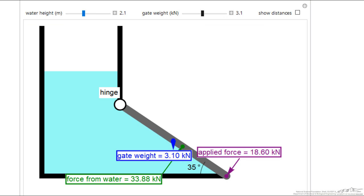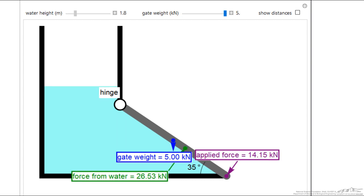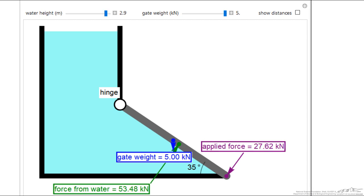Here the simulation shows: if I increase the gate weight, it takes less force to keep the gate closed. If I lower the water level, of course, less force. And if I raise the water level, it takes more and more force.